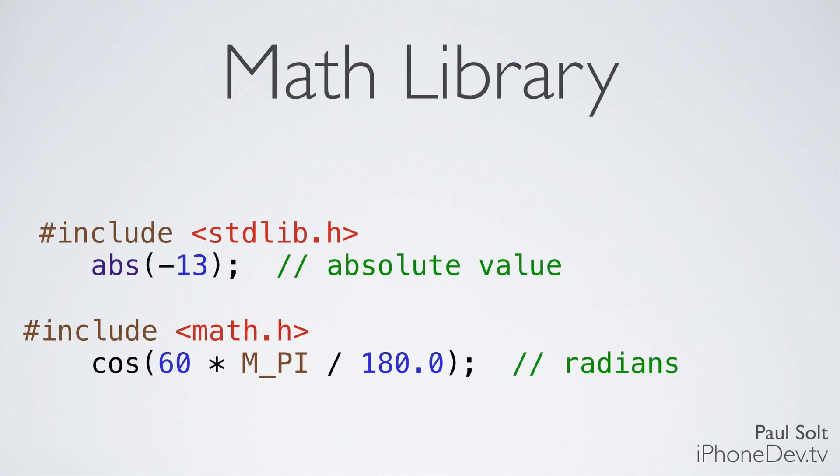All right, next up we have the math libraries. If you're just doing a C program, you can include stdlib.h, that's the standard library, and that gives you functions like absolute value, which can turn negative 13 into 13. And then in math.h, you can get access to cosine, sine, and tangent.